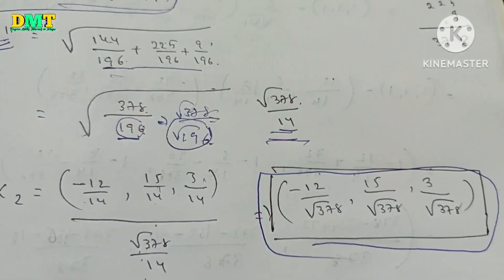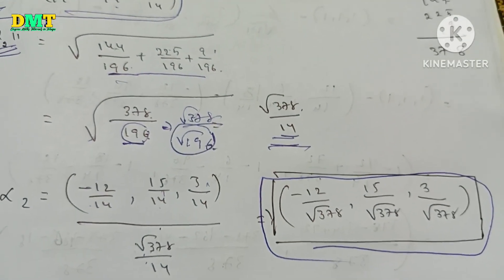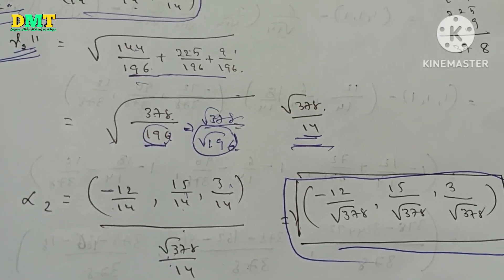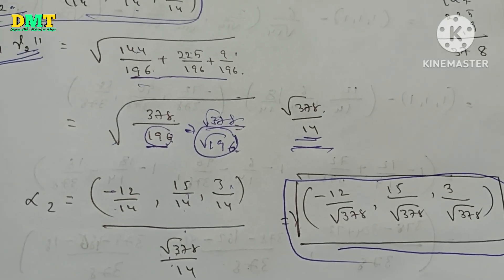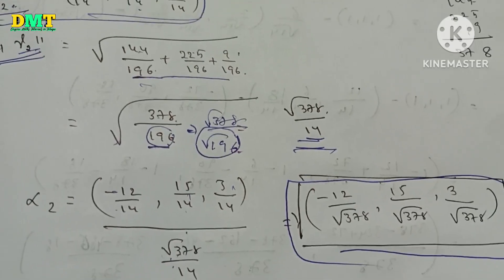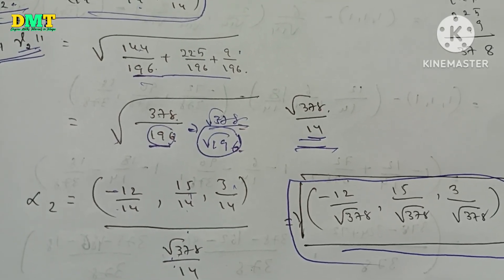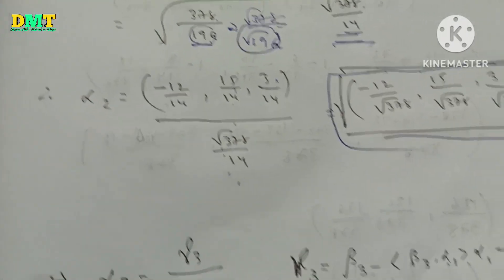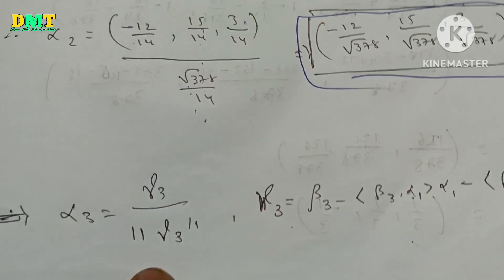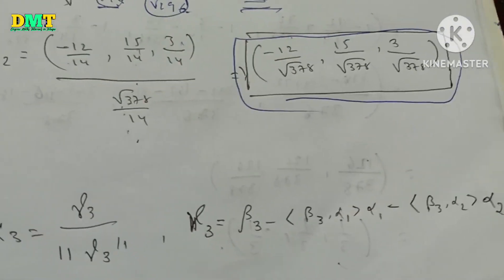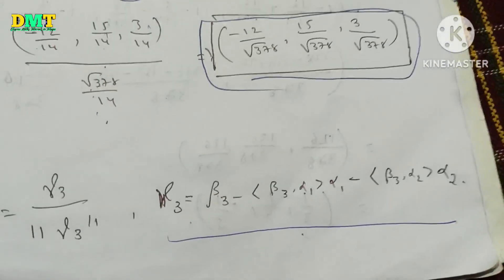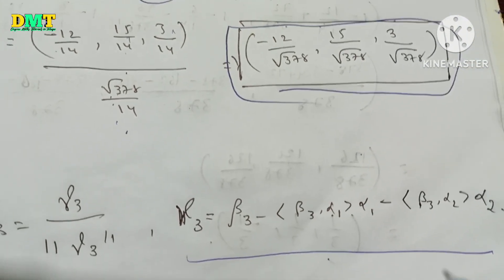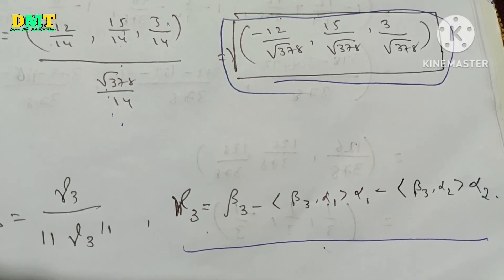Let's check. We will find alpha1, now alpha2. Next, alpha3. That's why gamma3 divided by norm gamma3. Gamma3 value is equal using the formula: beta3 minus (beta3 comma alpha1) times alpha1, minus (beta3 comma alpha2) times alpha2.